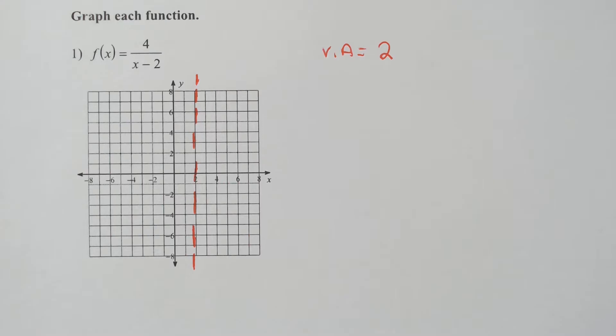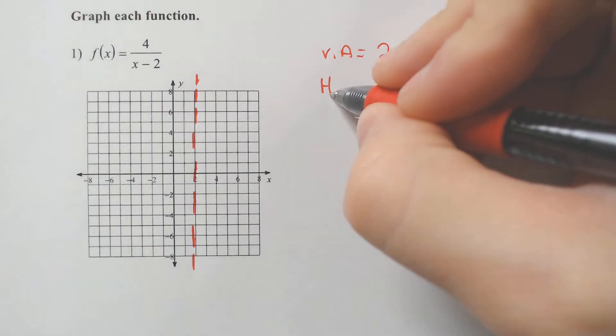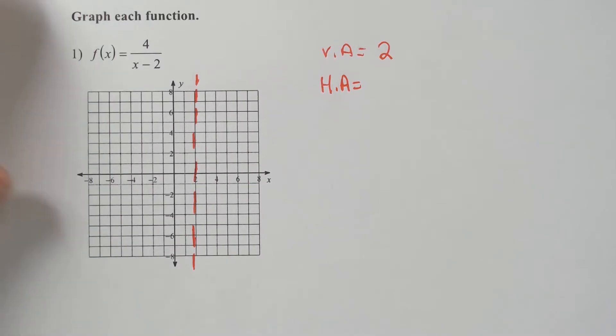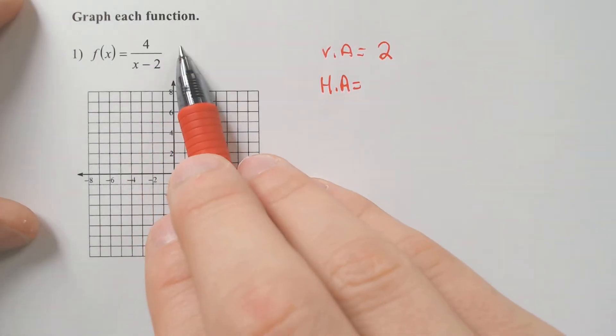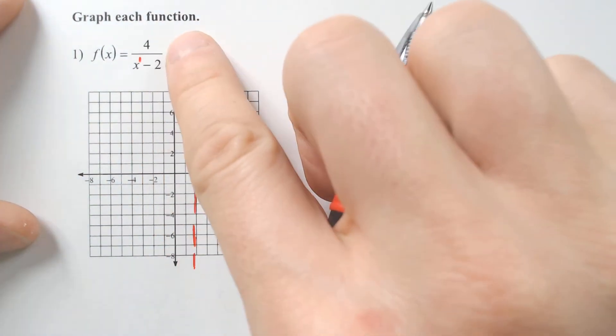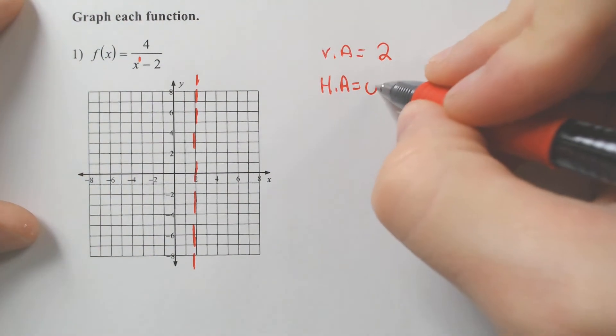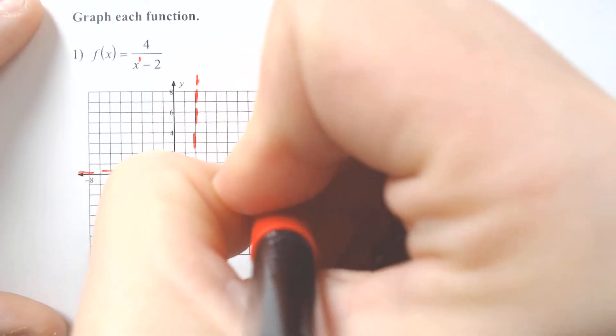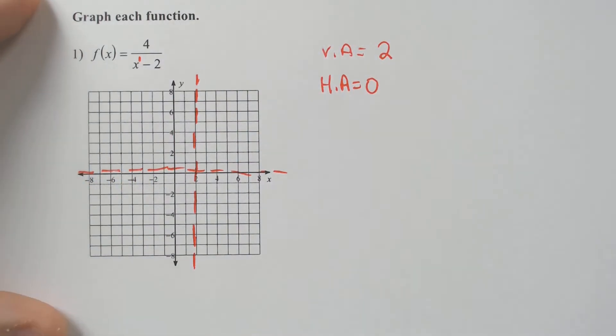And then from here, we would want to figure out what the horizontal asymptote is. Now, the horizontal asymptote is based off the exponent. So if it is a smaller exponent, which it is this time, over a bigger exponent, we have x to the first on the bottom, we have no x's on the top, that will guarantee the horizontal asymptote is zero. So we draw that dotted line there horizontally.